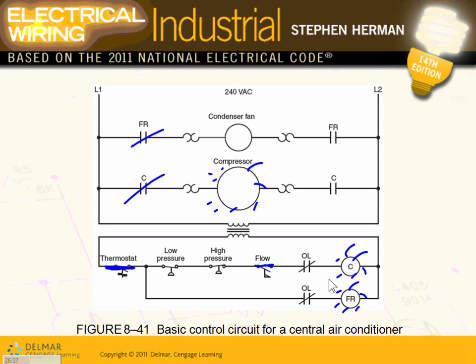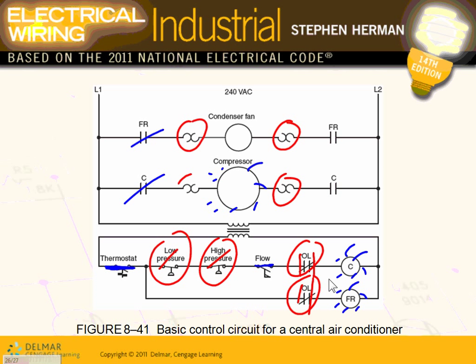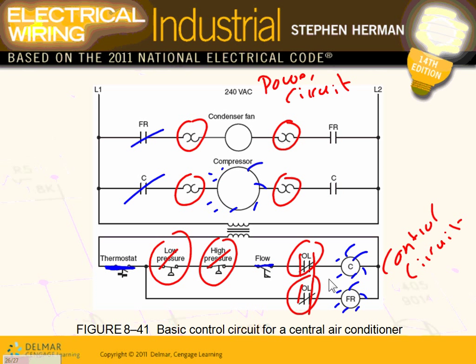If you have an overload instead of creating a bomb inside your compressor — if you have high pressure, this contact opens and kills the circuit. If you have low pressure, this opens and kills the circuit. If you have an overload condition, this opens and kills the circuit. All these devices are safety devices in the power circuit and the control circuit. This is your control circuit; this is your power circuit. Power to power the equipment, control to control the equipment.